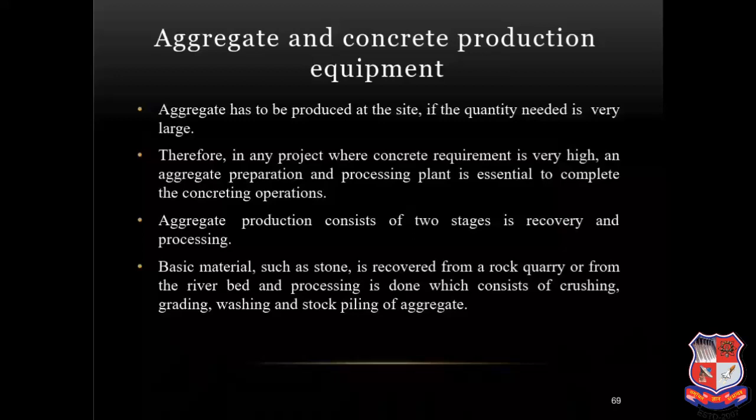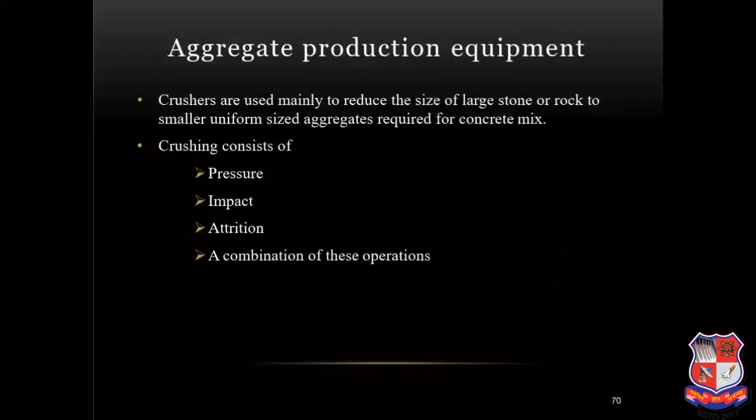Aggregate and concrete production equipment: aggregate has to be produced at the site if the quantity needed is very large. Therefore, if any project has a very high concrete requirement, an aggregate preparation and processing plant is essential. Aggregate production consists of two stages: recovery and processing. Basic material such as stone is recovered from a rock quarry or from the riverbed, and processing consists of crushing, grading, washing and stockpiling of the aggregate. Crushers are used mainly to reduce the size of large stone or rock to smaller uniform size aggregate required for the concrete mix, using pressure, impact, attrition or a combination of these operations.